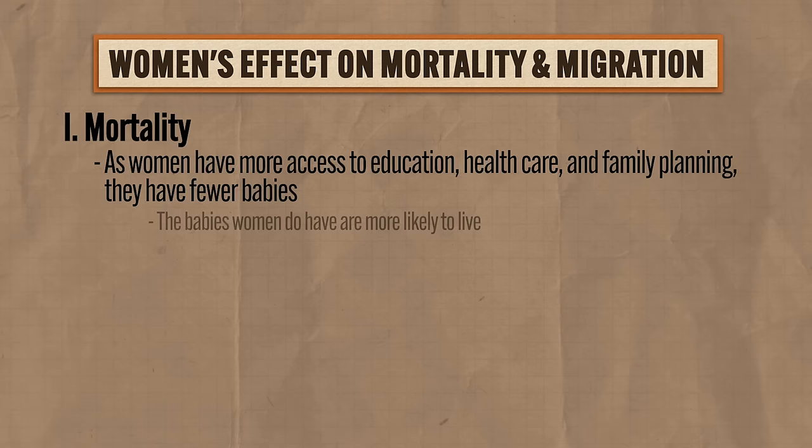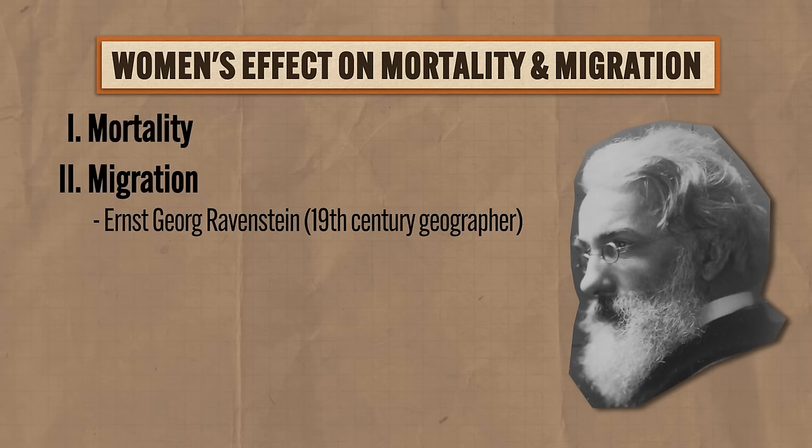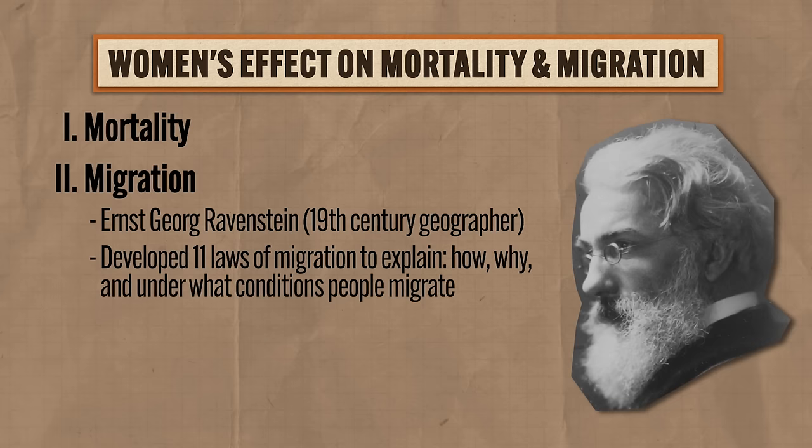The changing roles of women also affect mortality and migration. As women have more access to education, healthcare, and family planning, they have fewer babies — but the fewer babies they do have are more likely to live, meaning the infant mortality rate decreases. Regarding migration, geographer Ernst Georg Ravenstein developed 11 laws of migration. Law 6 states that women are more likely to migrate within their home country while men are more likely to migrate to other countries. In countries where women have more autonomy, they are often the chief movers in migration — and mostly it's rural to urban migration.